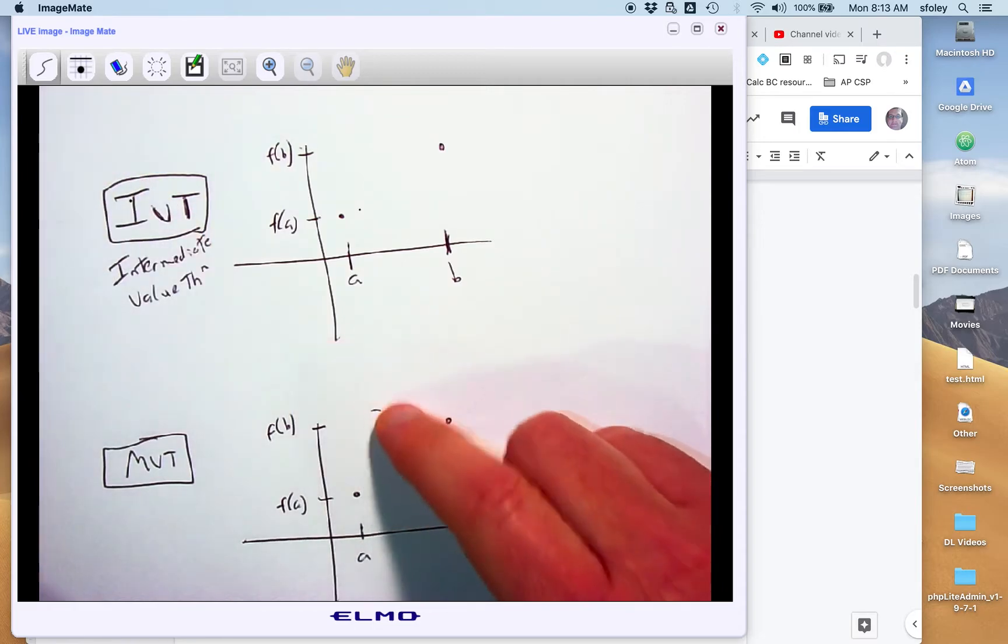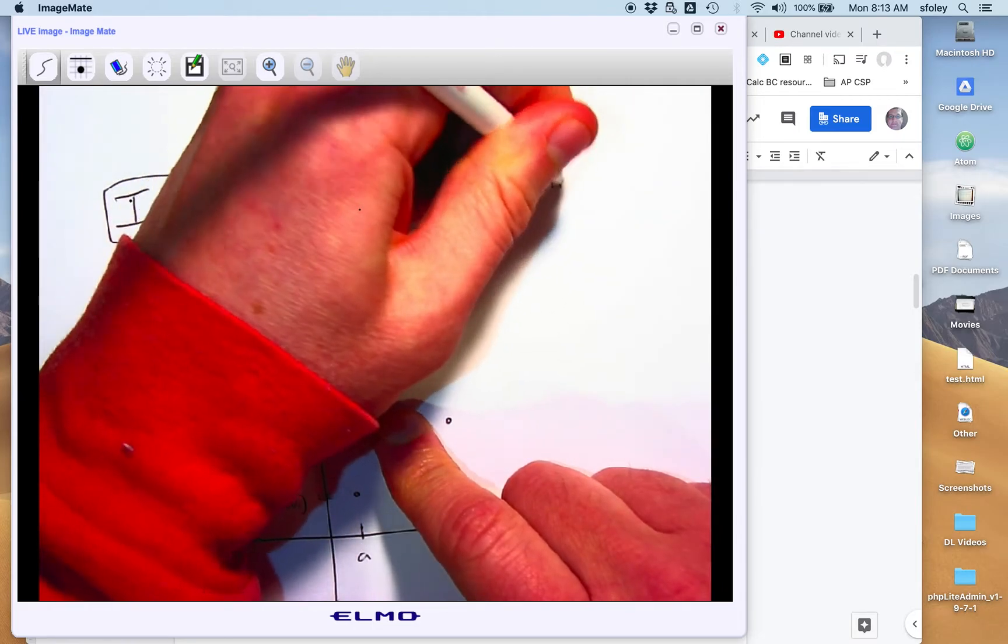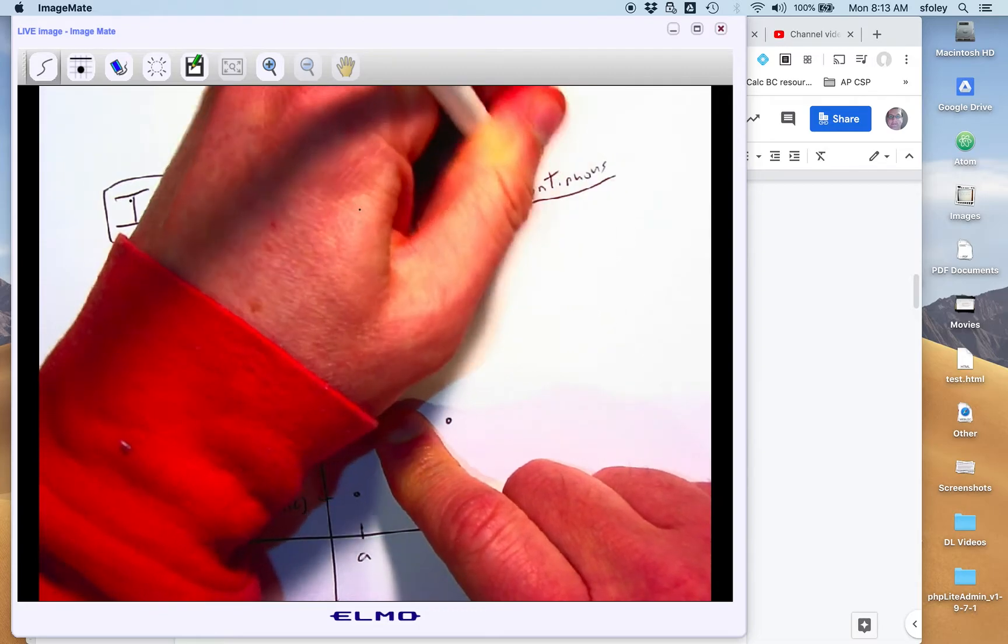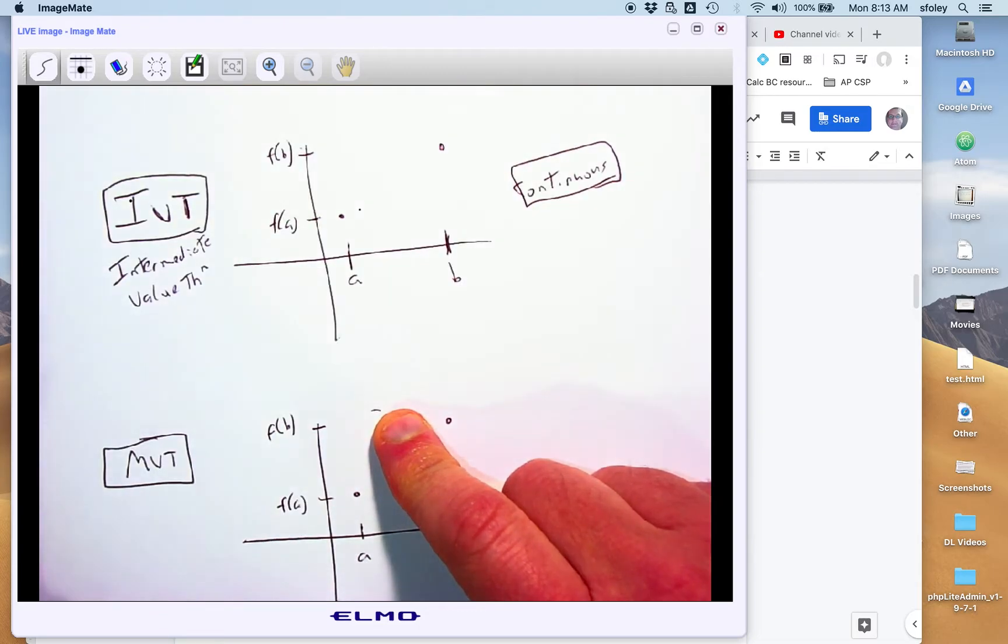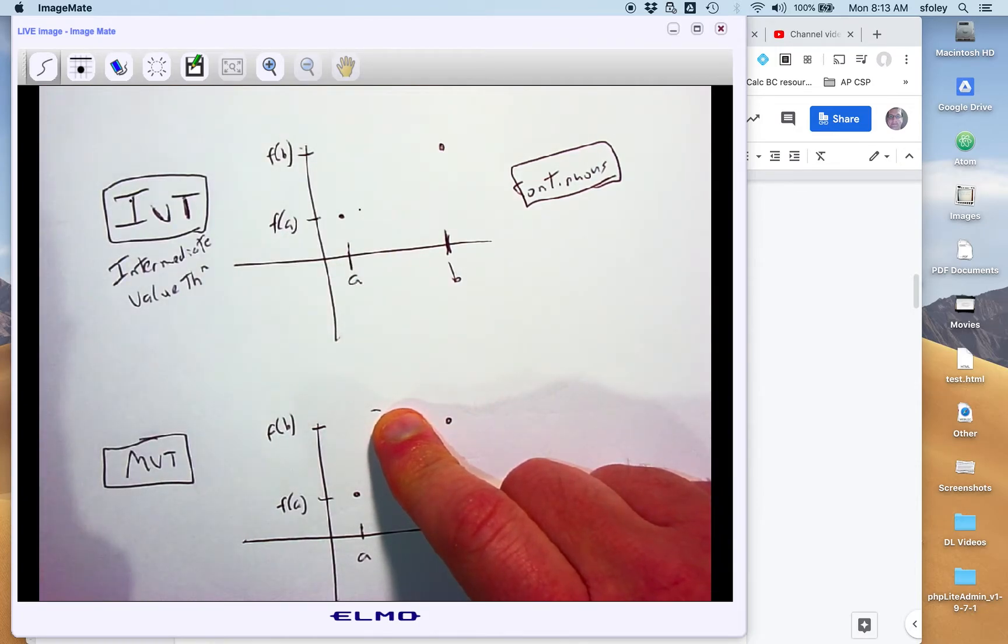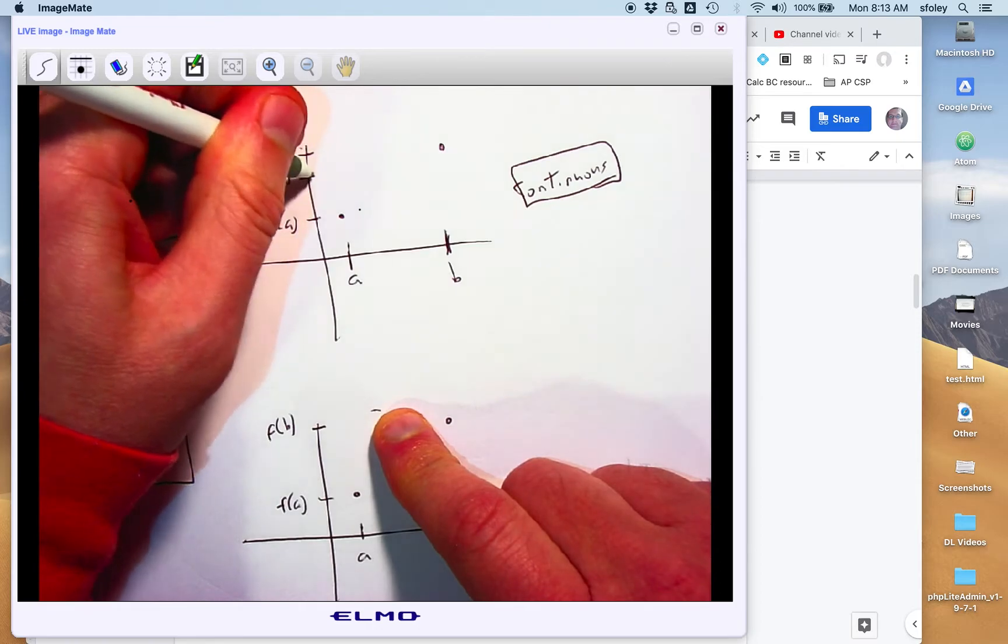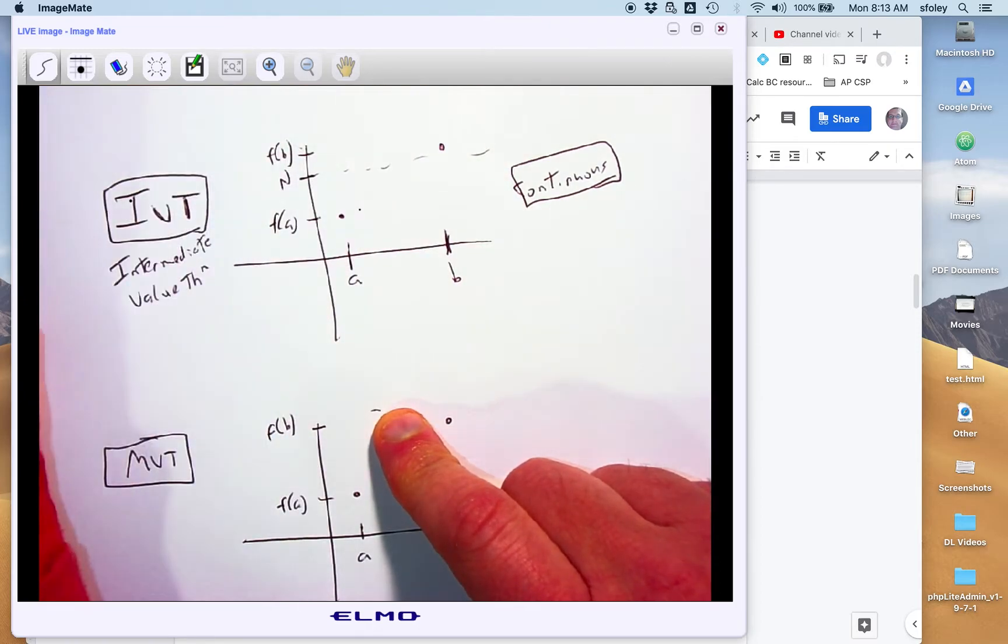And the picture here is we've got a function. It has to be continuous, so no holes, no jumps, no asymptotes. And if it's a continuous function and you've got the values at the endpoints of an interval, IVT just says that if you pick somewhere in between those two y values, the function has to hit that y value at least once.